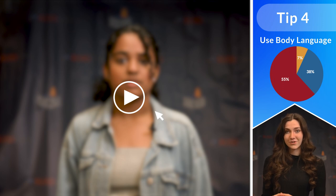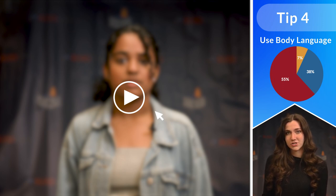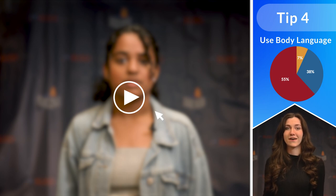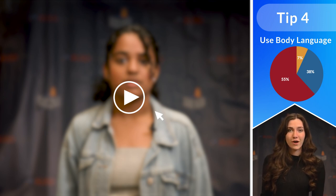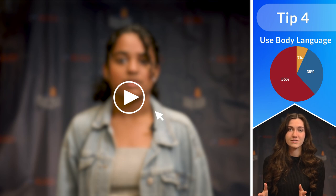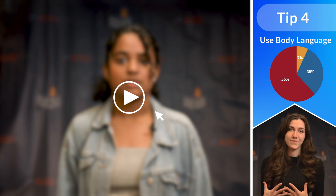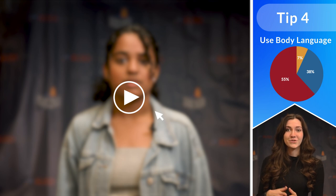The first step is to establish your body language from the very beginning of the soapbox speech. Plant your feet on the floor, put your shoulders back, raise your chin, and face your audience. This will show your confidence and encourage them to pay attention. Throughout your speech, make eye contact with members of the audience. Remember, your goal is to connect with them.